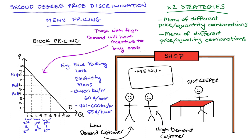For customers who don't have such a high demand, they just won't buy as much product — you get that same self-selection outcome where different sorts of customers are choosing different options from the menu offered. So those are two types of quantity discounts: bulk buying and block pricing. There are some other types in the literature but I won't cover them here — I think those are the main ones.